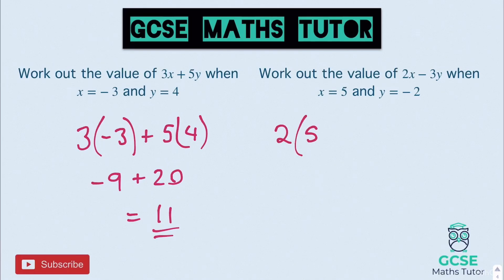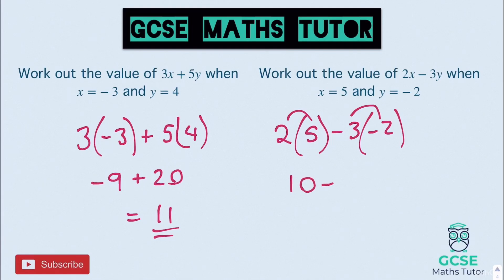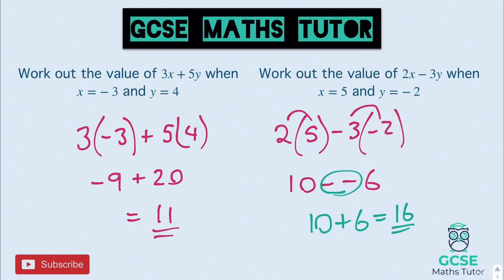For the second one, we have 2 lots of x take away 3 lots of negative 2. So 2 times 5 is 10, take away 3 lots of negative 2, which is negative 6. We could see that as negative 3 times negative 6, giving plus 6 — or as take away a negative, which turns into a plus. So it's 10 plus 6, which is 16. Be very careful with your signs and the rules for adding and subtracting negatives.